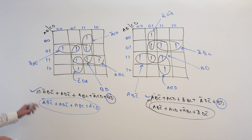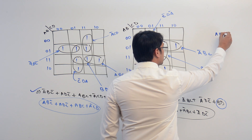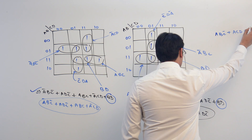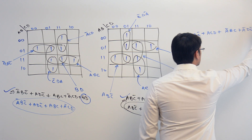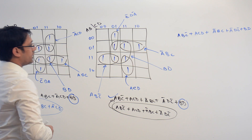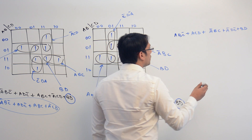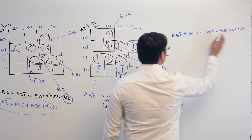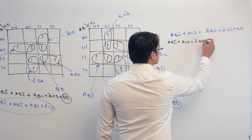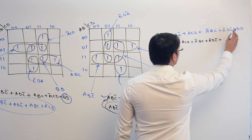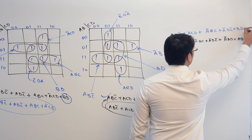Let me take this one: A, B, C complement plus A, C, D plus A complement, B, C plus A complement, D, C complement plus BD. What you can do is take A complement plus A, so we expand BD as A complement, B, D plus A, B, D.